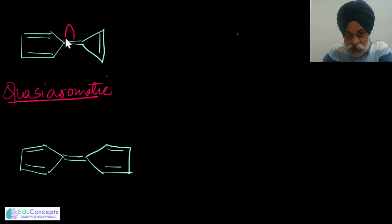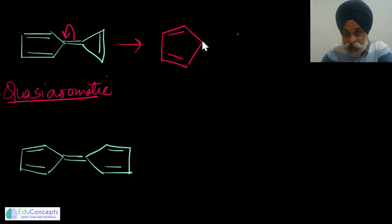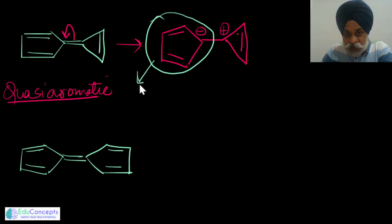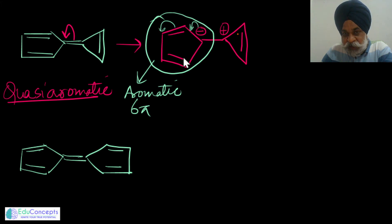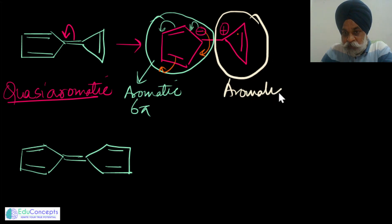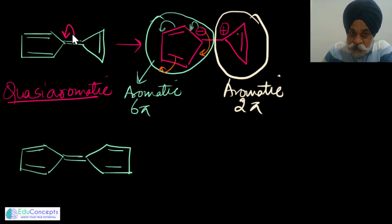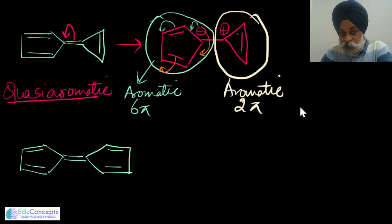Doing the polarization one way gives this part as positive, this as negative. In doing so, this part becomes aromatic because we now have six pi electrons, perfectly delocalized. The delocalization can proceed from both sides. The cyclopropenyl cation has two pi electrons making it aromatic. So both entities become aromatic on polarization of one pi bond, confirming it is quasi-aromatic.